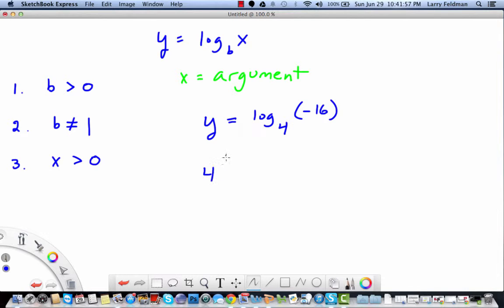Converting to exponential form, we get 4 to the y equals negative 16. A common mistake that students make is thinking that y equals negative 2 would solve this problem. Let's try it. 4 to the negative 2 is 1 over 4 squared, which is 1 sixteenth. So that doesn't work. And actually, if you raise a positive number to any power, you'll always get a positive result. So there will never be a solution in a problem like this.